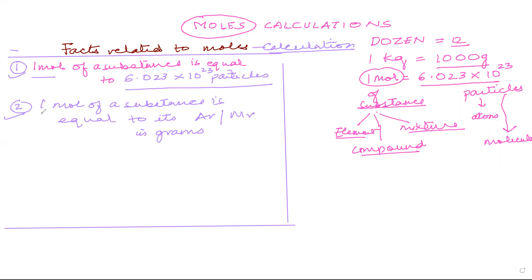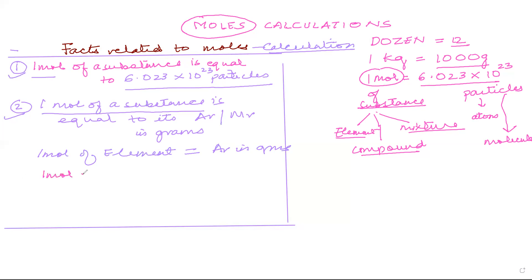The second fact is that one mole of a substance is equal to its Ar or Mr in grams. If you have one mole of an element, it equals its Ar in grams. For example, one mole of sodium equals 23 grams. Similarly, one mole of carbon equals 12 grams.